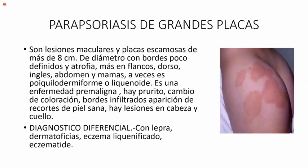Otras parapsoriasis no son en pequeñas placas sino en grandes placas, llenas de escamas. Son lesiones maculares y placas escamosas de más de 8 centímetros de diámetro, con bordes poco definidos y atrofia; esa piel se ve como apolillada. Más en flancos, dorso, ingles, abdomen y mamas. A veces es poiquilodermiforme, como la piel del elefante, dura y áspera. Es una enfermedad premaligna; hay que hacer estudios de órganos internos. Hay cambio de coloración, bordes infiltrados, y lesiones en cabeza y cuello.